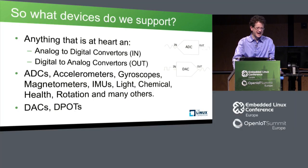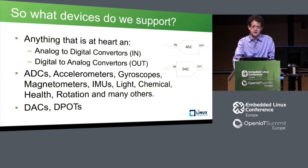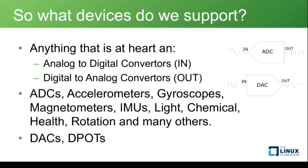What devices do we support? Basically anything that's an ADC — takes an analog signal in, gives you a number. A DAC goes the other way; that was added later, but you get parts that do both, so it makes sense to share infrastructure. The list includes ADCs, accelerometers, gyroscopes, magnetometers, IMUs, light sensors, chemical sensors, a lot of volatile organic compound sensors recently, things for measuring pollution, dangerous gas sensors, health sensors like pulse oximeters, rotation sensors. On the DAC side it's mostly actual DACs and digital potentiometers.